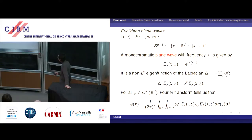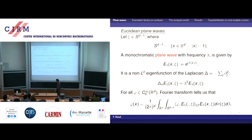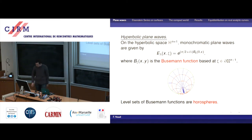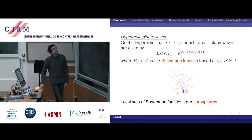This is not just for the case of Euclidean space. It also works for the hyperbolic space and more generally for symmetric spaces. Since I will be mostly focusing on hyperbolic manifolds and especially surfaces, I would like to recall what the monochromatic plane waves are in the hyperbolic setting.